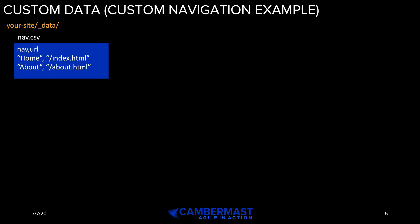Before I get into showing you custom data, I want to let you know you can create almost any type of data that you want. I'm going to show you examples of creating a custom navigation menu as a data file, which is pretty popular to do in Jekyll. If you want to create your own data files, go to your site's folder at the root and create a new folder called _data, and in there you can put any number of files. There are certain data file formats that Jekyll supports, and I'm going to walk you through those now.